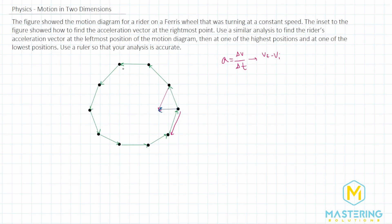So you can see that around a circular arc or circular motion, the acceleration vector is pointed towards the center of the circle. So let's do the same thing like the question talks about for the leftmost point.